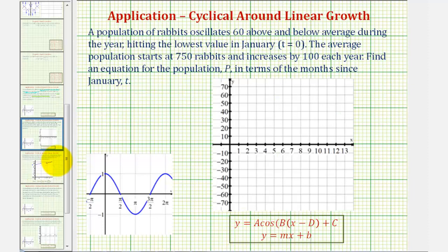Because the population oscillates over 12 months, the period of the trig function would be 12. So we should have one complete graph of the trig function starting at t equals zero to t equals 12. And because the population oscillates 60 above to 60 below, our graph will resemble the cosine function, which we see graphed here.